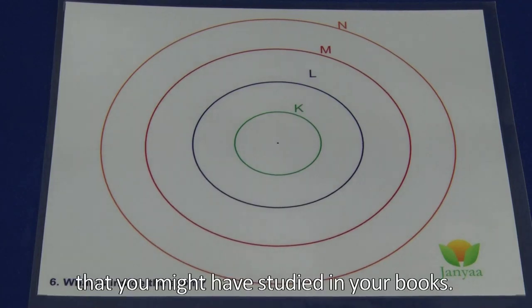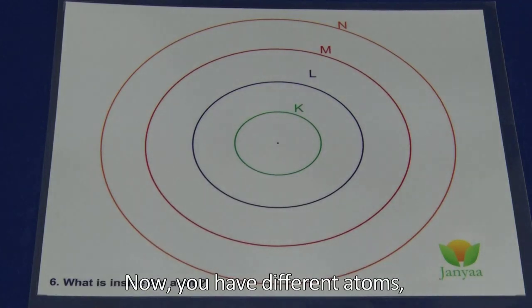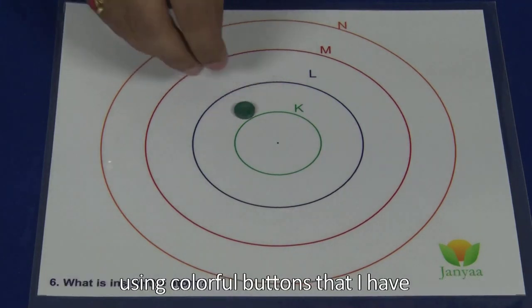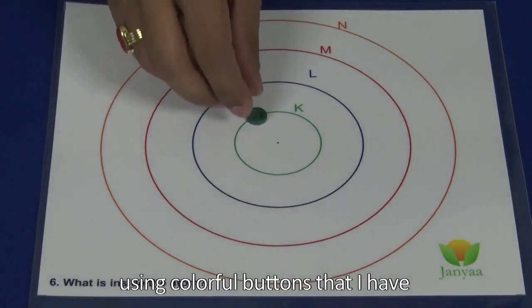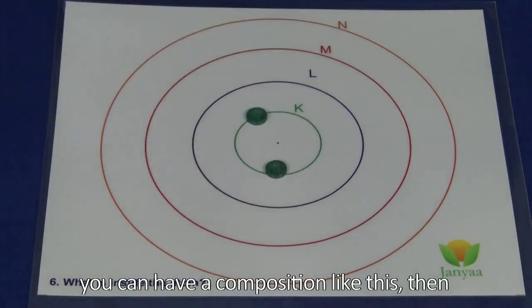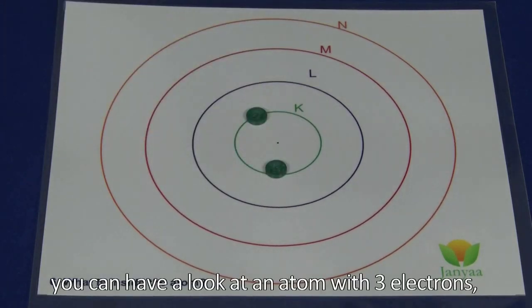You have different atoms. So hydrogen has one electron, so you can represent it using colorful buttons that I have in the K shell, and you can proceed. For an atom with two electrons, you can have a composition like this. Then you can have a look at an atom with three electrons.